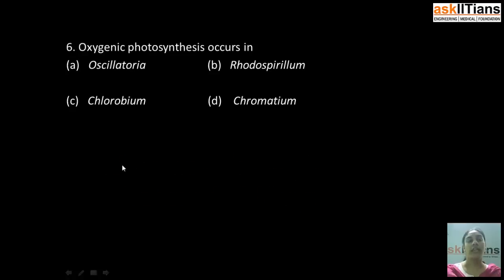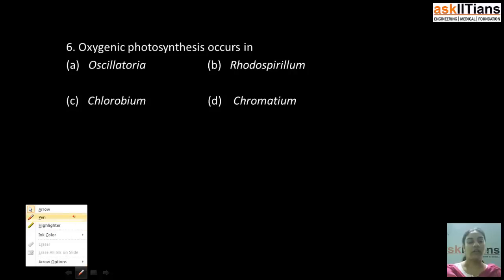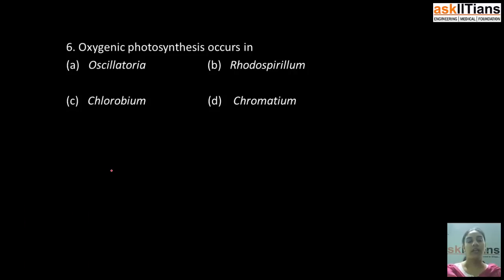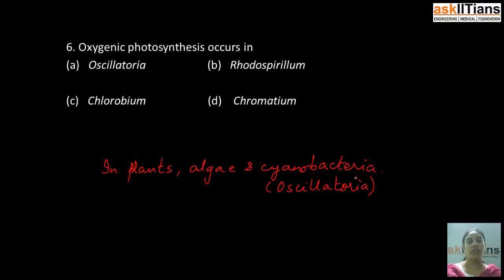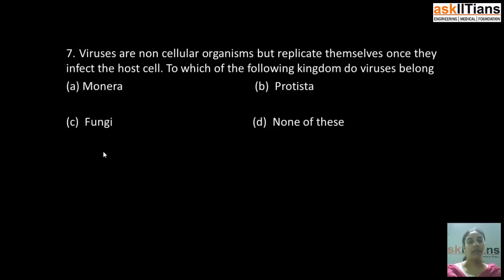Our next question is: oxygenic photosynthesis occurs in — A) Oscillatoria, B) Rhodospirillum, C) Chlorobium, D) Chromatium. The correct answer is A: Oscillatoria. Oxygenic photosynthesis occurs in plants, algae, and cyanobacteria. In oxygenic photosynthesis, oxygen is released during photosynthesis. Oscillatoria is a cyanobacterium, therefore oxygenic photosynthesis occurs in Oscillatoria. Among the other options, Rhodospirillum, Chlorobium, and Chromatium are all bacteria.